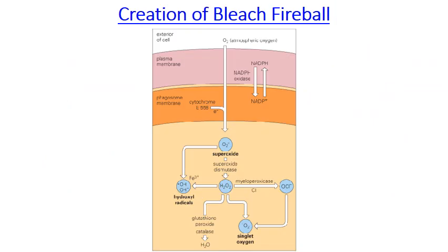This next step has been called the creation of a bleach fireball — like the cell creating a vat of bleach, dumping gasoline on it, and lighting it on fire. This process is known as respiratory burst or oxidative burst. All of these processes lead not only to the death of the pathogen, but also of the neutrophil. Nothing organic can survive this assault, and the neutrophil is most definitely organic.